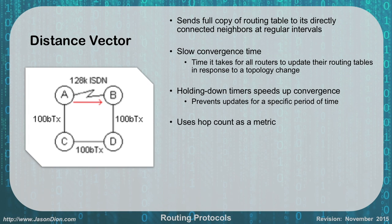The first way we look at things is based on distance — this is a distance vector protocol. It sends a full copy of the routing table to everyone it's directly connected to. In this particular example, we have a 100-megabit transmission on A to C, B to D, and C to D. Up top, we have a 128 kilobit connection, which is our serial link.